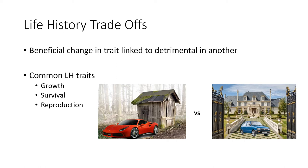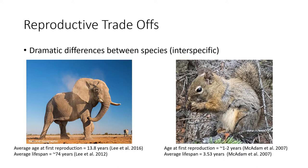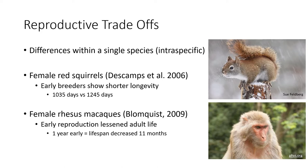These reproductive trade-offs can be seen between different species, such as those between the elephant and red squirrel, where dramatic differences are shown between their average age at first reproduction and their average lifespan. However, they can also be seen within the same species, like the difference between early and late reproduction in red squirrels and macaques. Often, those who delay reproduction have the longest survival.